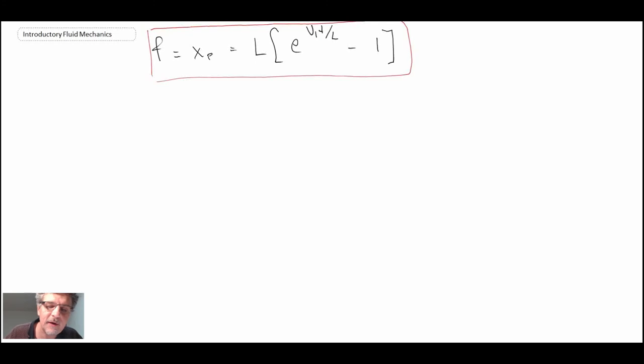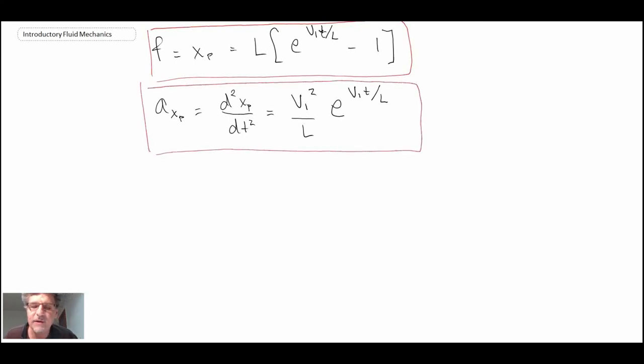So that's what we get for the particle position expressed in Lagrangian. So as a function of particle location and as a function of time, I should say, as you'll notice, we have t as being the variable. And if you recall, we are looking for the acceleration of the particle. Well, the acceleration of the particle is just going to be the second derivative of the particle position with respect to time. And so let's evaluate that, and we get this expression. So this then tells us what the particle acceleration is as a function of time.